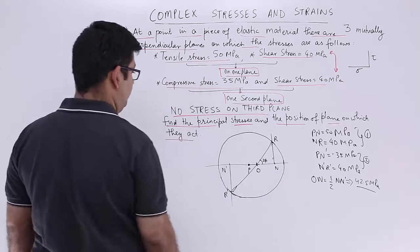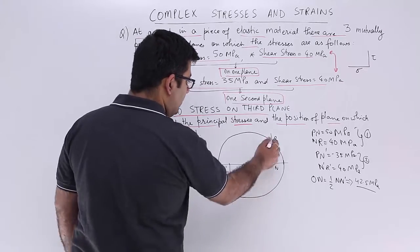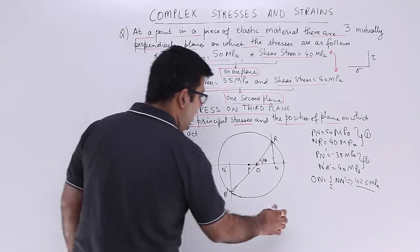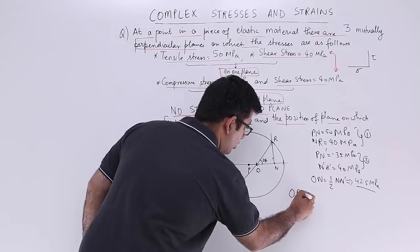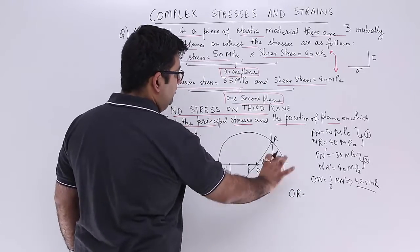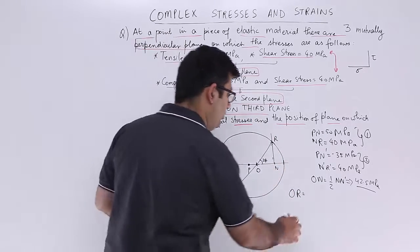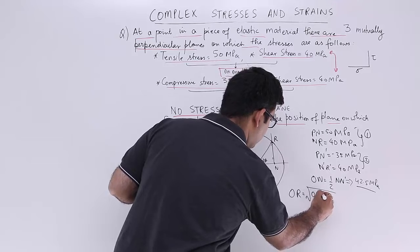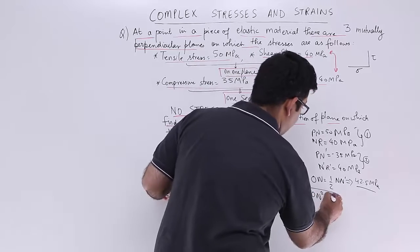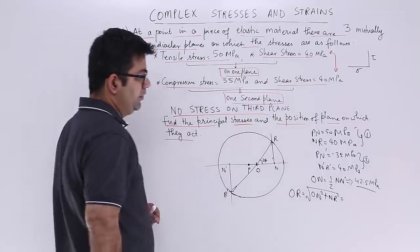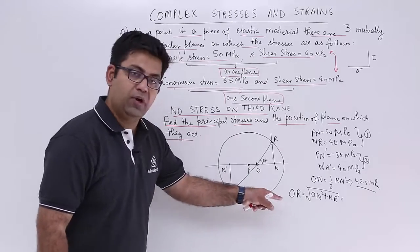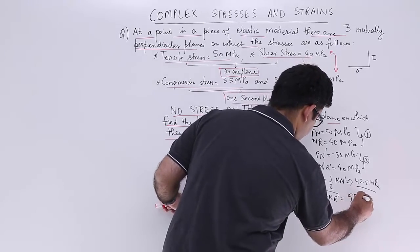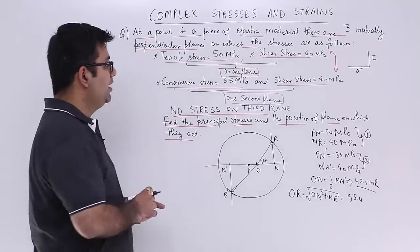Now let's find out or. So this is the right angle triangle. I have on, I have n r, I can easily find out or. So or would be nothing but under root of square of this plus square of this. So this you find that value you get the value for or. So or would be equal to 58.4.